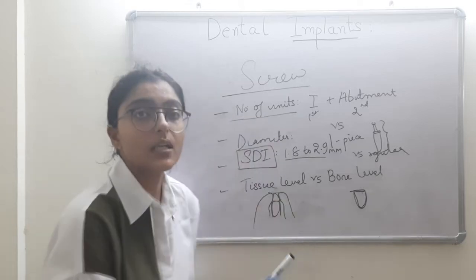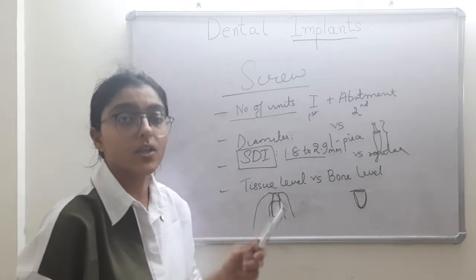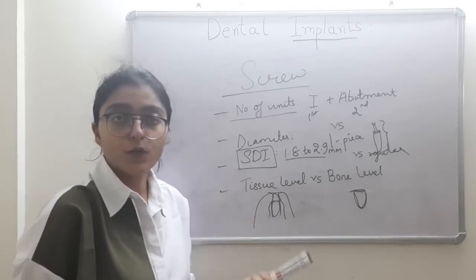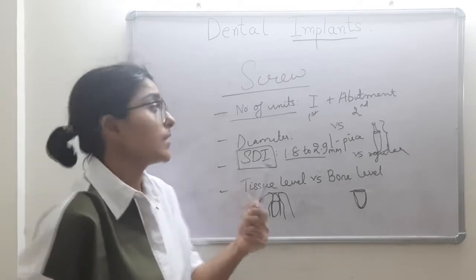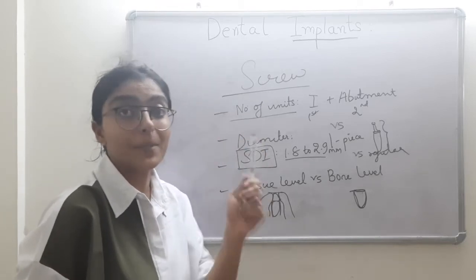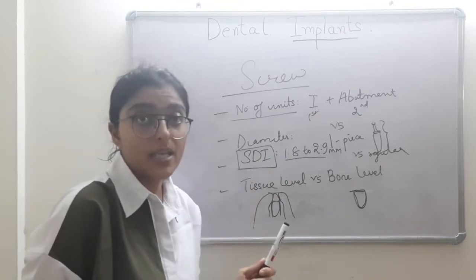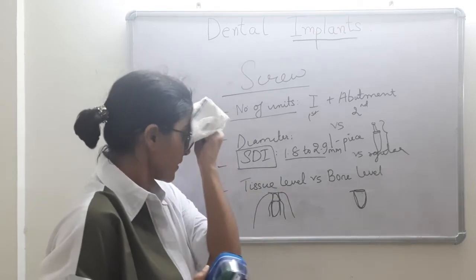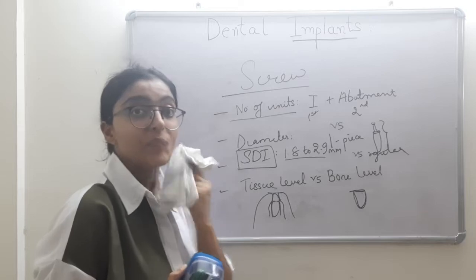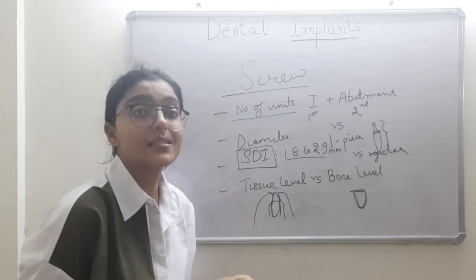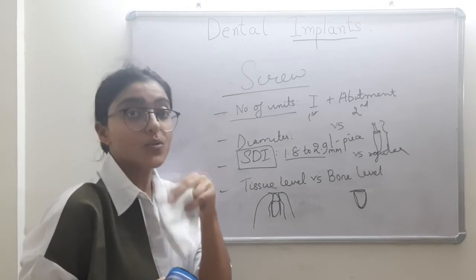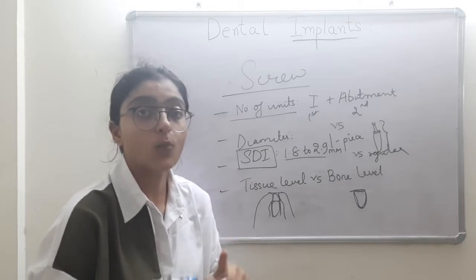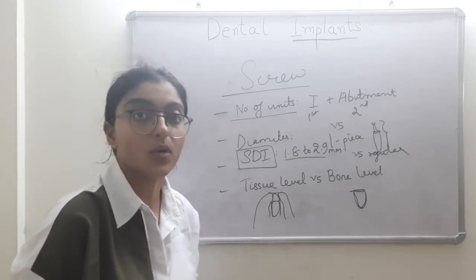Summary of types of implants: endosteal, periosteal, and transosteal. Under endosteal: blade form and root form. Under root form: cylinder and screw shape. Under screw shape: one-piece vs. two-piece, small diameter implants, and tissue level vs. bone level. Now we will proceed to discuss implant macrostructure and microstructure.